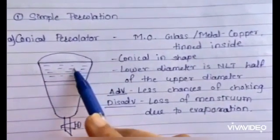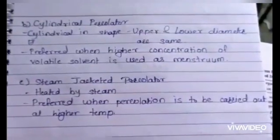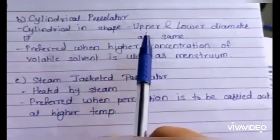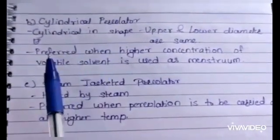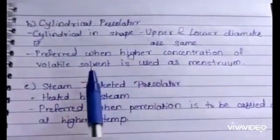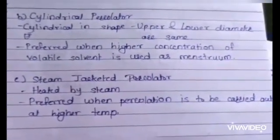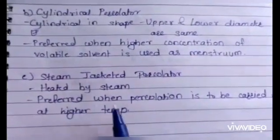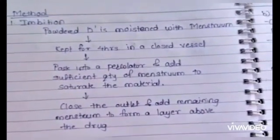The second type of apparatus used in simple percolation is the cylindrical percolator. It is cylindrical in shape, meaning the upper and lower diameters are the same. An example is the coffee percolator. This type is preferred when a higher concentration of volatile solvent is used as the menstruum. The third type is the steam jacketed percolator, where the percolator is heated by steam. This type is preferred when percolation is to be carried out at higher temperatures.